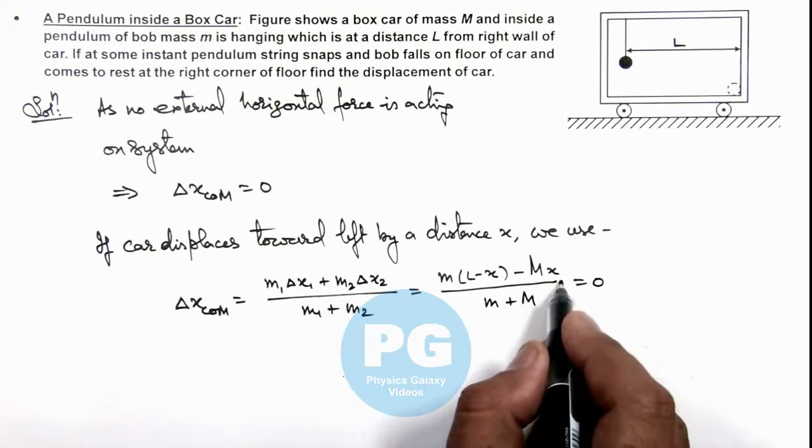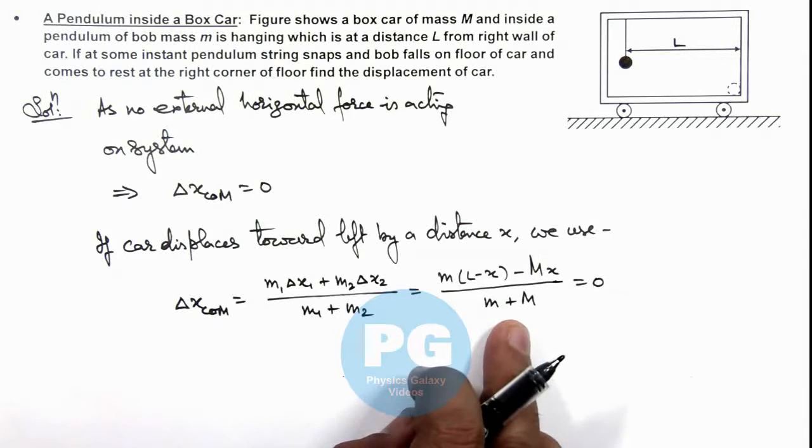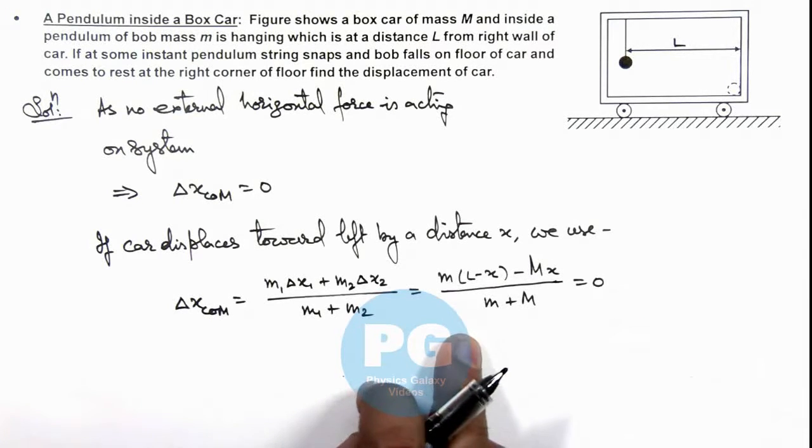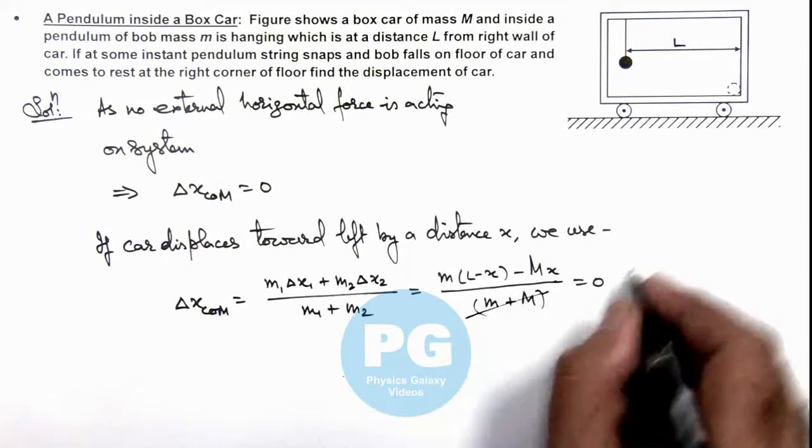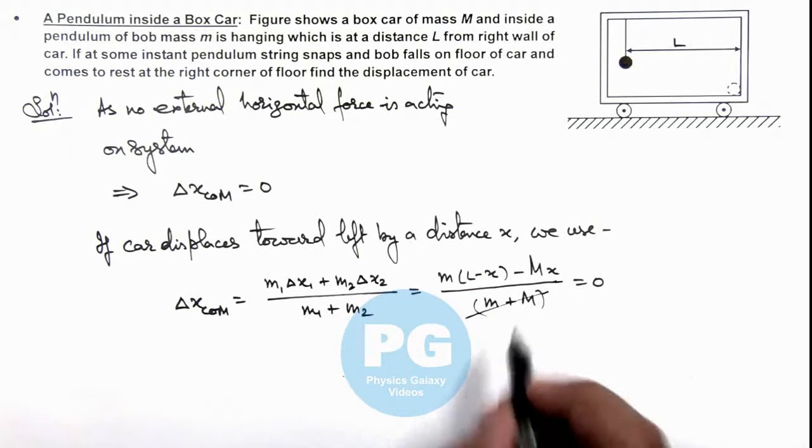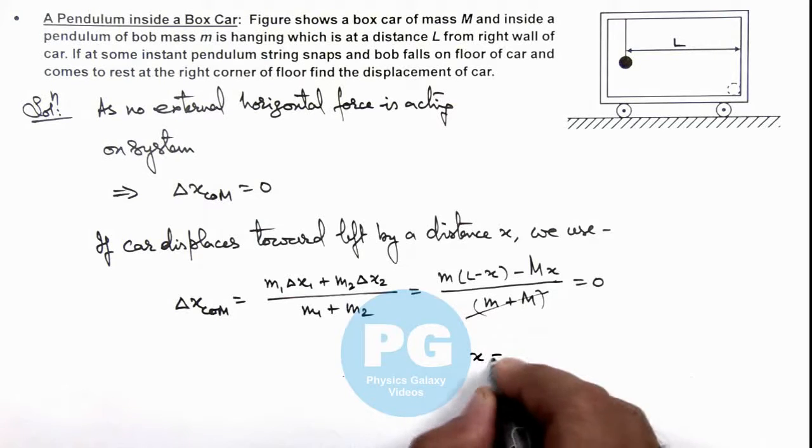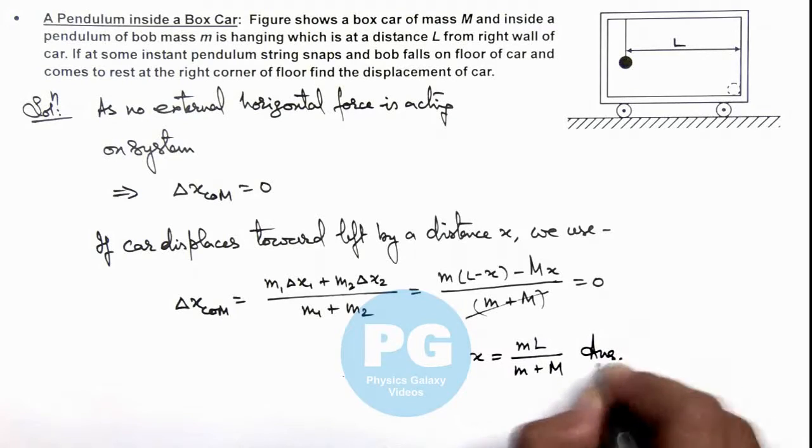Because the displacement of center of mass should be zero, on simplifying this relation, the denominator gets cancelled out as m plus M can never tend to infinity. So we can write the value of x is mL by m plus capital M. That will be the result of this problem.